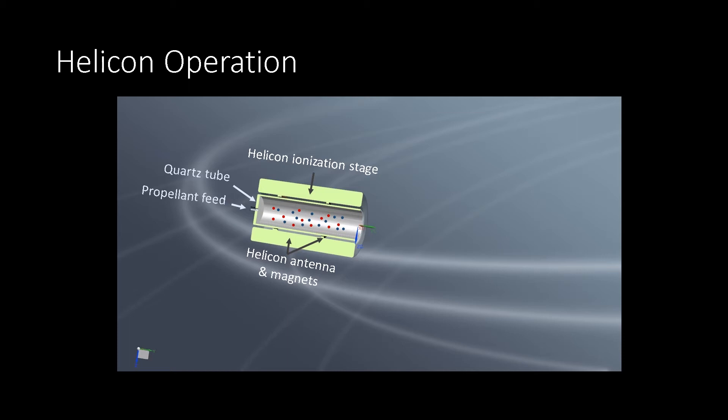For a single stage helicon thruster, the plasma is simply allowed to expand out the back of the chamber, where it gets accelerated across the plasma sheath at the exit, and it forms a high energy exhaust beam that is used to propel the spacecraft.